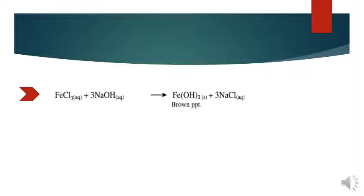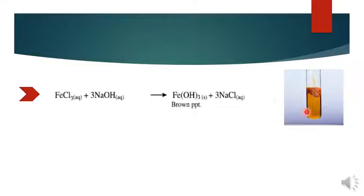Now let's look at another equation: between FeCl3 and alkali NaOH. When you have these two reactions, you will have brown precipitates, which is Fe(OH)3. See the diagram — this is the brown color solution of FeCl3. When this reacts with NaOH, at the point where these two meet, you get precipitates which are not soluble.